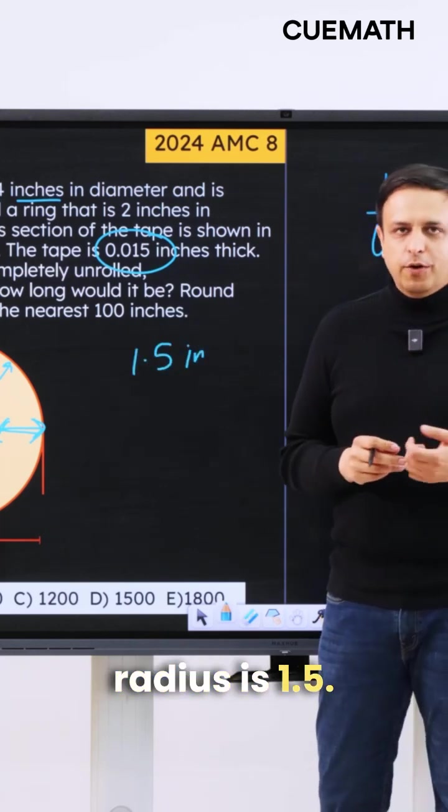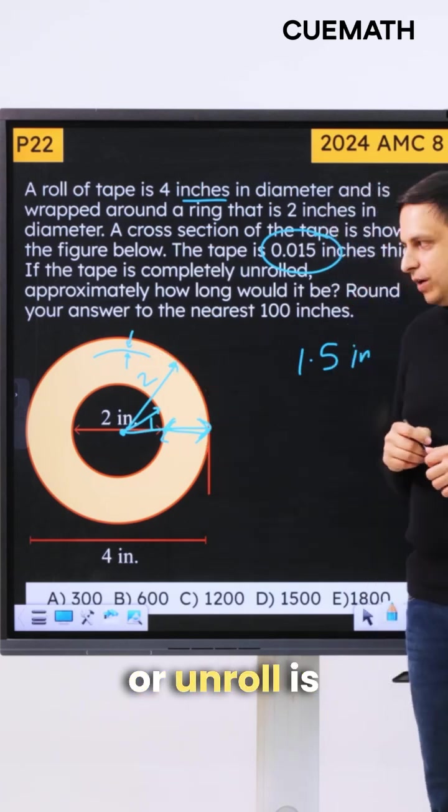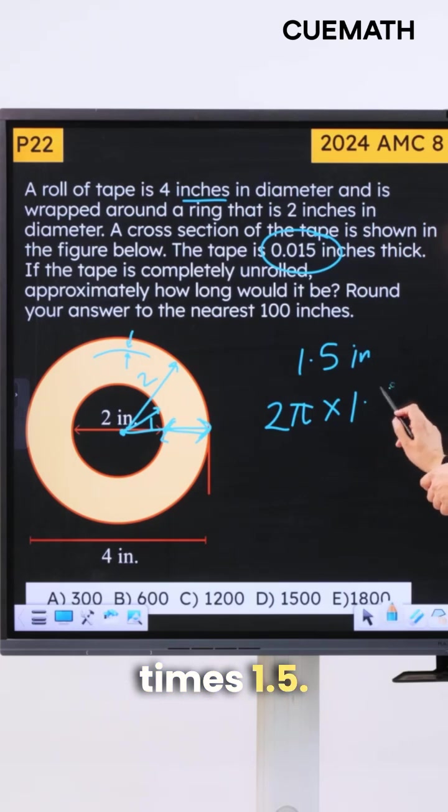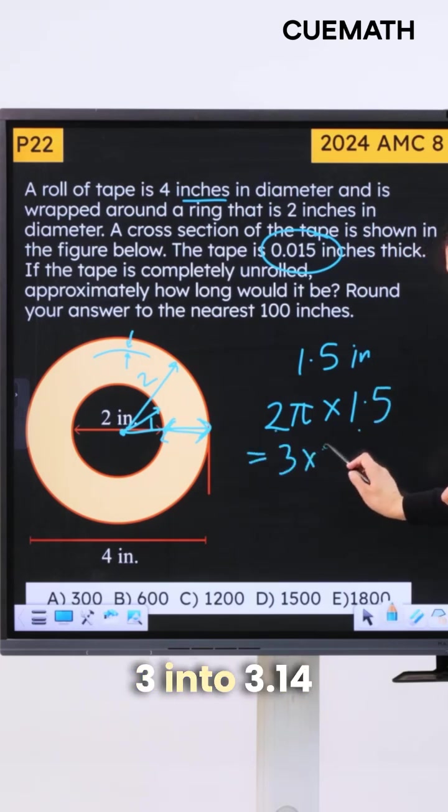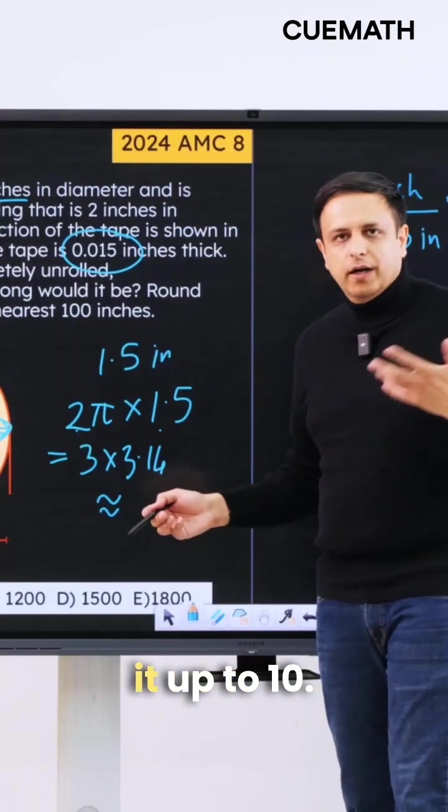So the average radius is 1.5, and therefore the average circumference of every full roll or unroll is 2πr, or 2π times 1.5, and this is 3 times 3.14. Let's just round it up to 10.